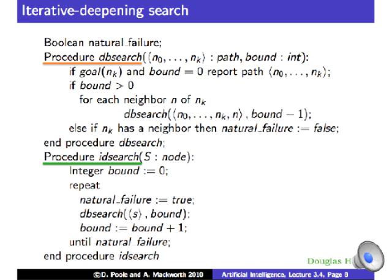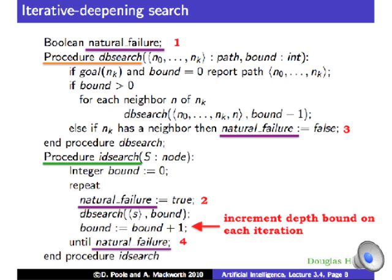This is the algorithm for iterative deepening search from the Poole-Mackworth slide set. It's slightly different from the algorithm shown in the text, but essentially the same. At the bottom, we see iterative deepening search — underlined in green — using db_search (depth-bounded search) as a subroutine. There's a global variable called natural_failure, which is referenced a total of four times in the code. It's declared as Boolean at the top. Under ID search, natural_failure is initialized to true. The repeat-until loop performs repeated depth-bounded searches, each time incrementing the depth-bound by one on successive iterations.